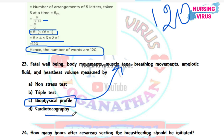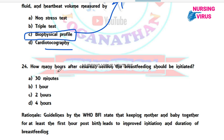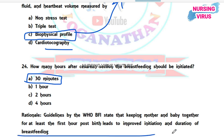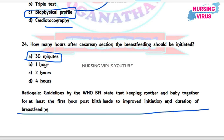Question 24: How many hours after a caesarean section should breastfeeding be initiated? The options are 30 minutes, one hour, two hours, and four hours. For a normal delivery, breastfeeding should begin within 30 minutes. According to WHO guidelines, keeping mother and baby together for at least the first hour after birth improves the initiation and duration of breastfeeding. The answer may be one hour for caesarean section.